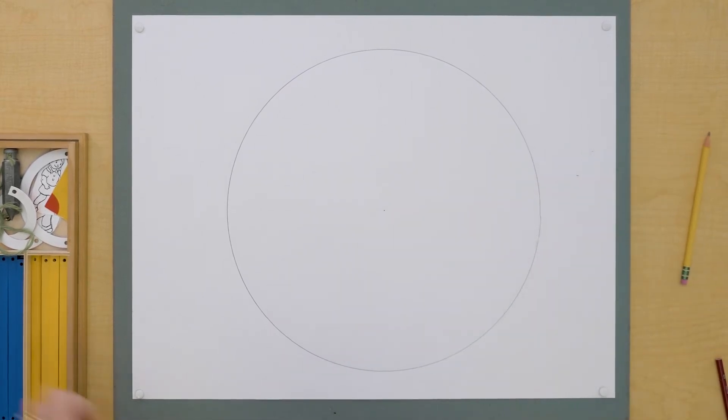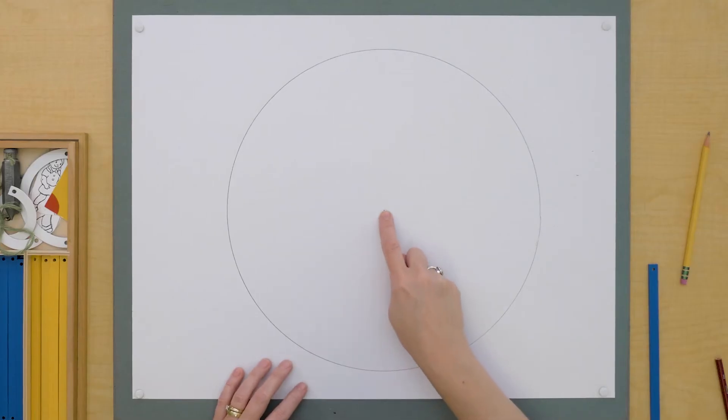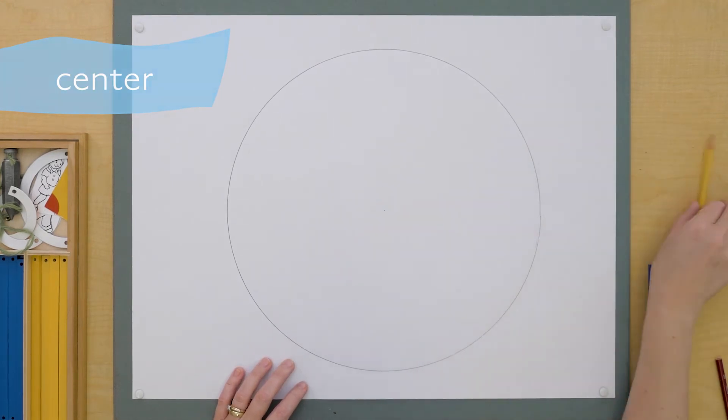So here I've created a circle. This part of the circle right here, this prick point in the middle, is called the center. It actually comes from a Greek word meaning to prick. So this point is our center.